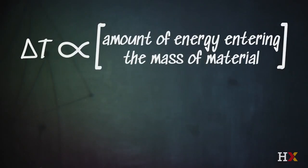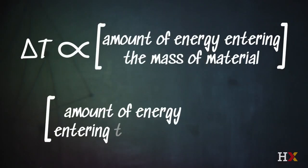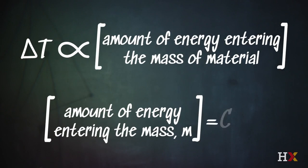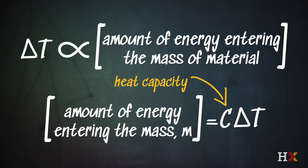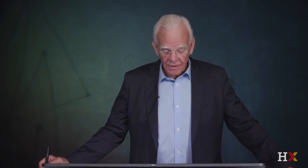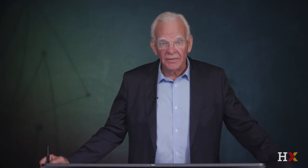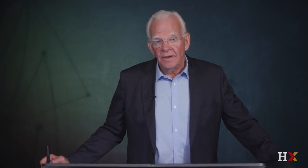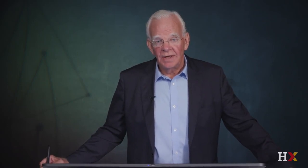To calculate the amount of energy entering this mass m — this 100-kilogram steel box — we need a proportionality factor between the change in temperature and the amount of energy released in the reaction of gasoline with oxygen. That proportionality constant is called the heat capacity of the steel box, which tells you the temperature change per unit of energy entering that material.